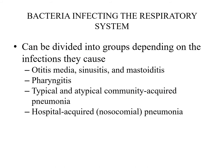Bacteria infecting the respiratory system can be grouped by infection type: those causing otitis media, sinusitis, mastoiditis, and pharyngitis. For lower respiratory tract infections, pneumonia can be classified multiple ways: typical vs. atypical, community-acquired vs. hospital-acquired, and by anatomical location as lobar, segmental, or interstitial pneumonia. We will discuss all these classification types.